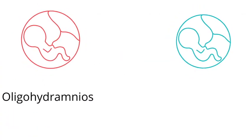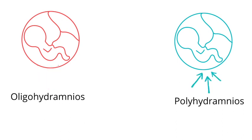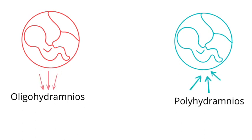Oligohydramnios is when there is a decreased amount of amniotic fluid, which is what those down arrows are highlighting. And polyhydramnios is where there is an increased amount of amniotic fluid, which is what the up arrows are highlighting.